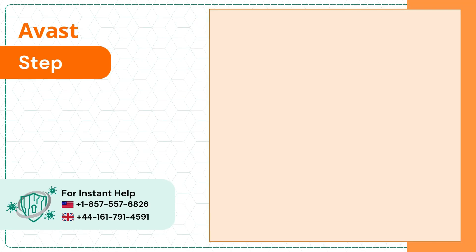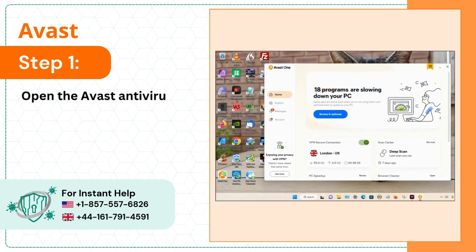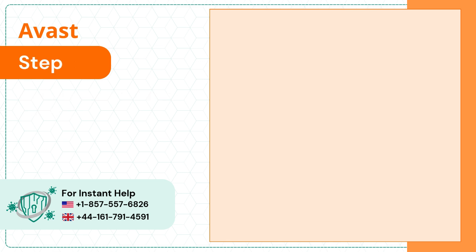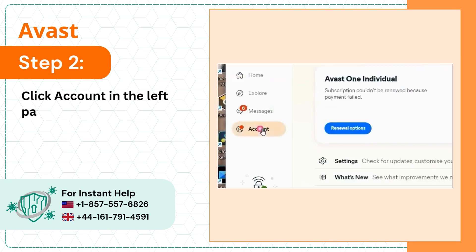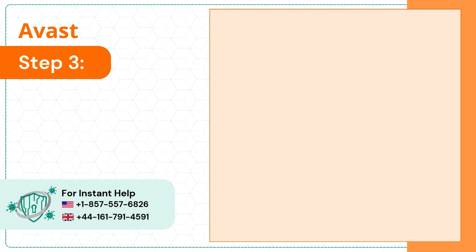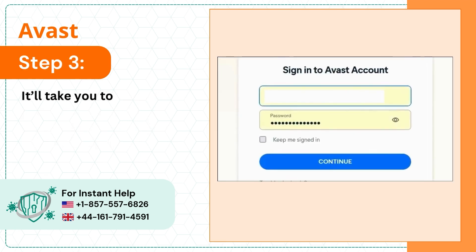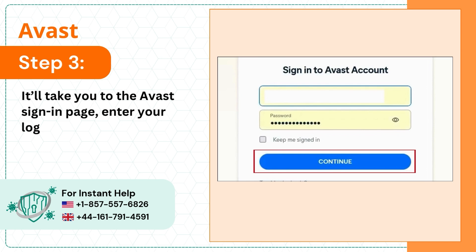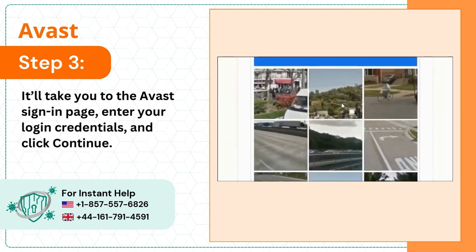Step 1: Open the Avast antivirus program. Step 2: Click Account in the left panel, then click Avast Account on the top right side of the screen. Step 3: It'll take you to the Avast sign-in page. Enter your login credentials and click Continue.